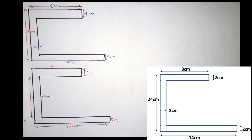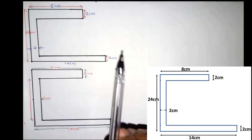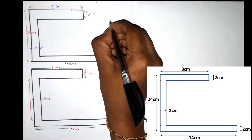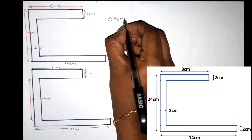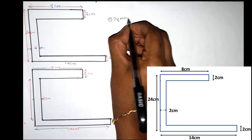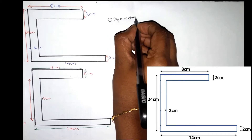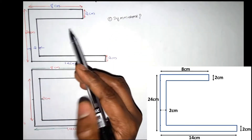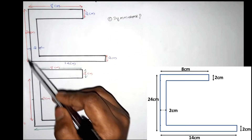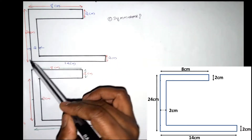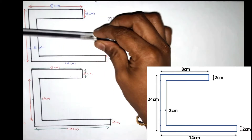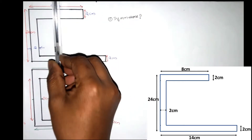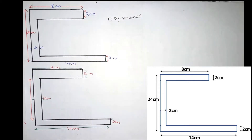The first step is to check if the figure is symmetrical. If you look at the figure, it is not symmetrical — if you look at this axis, it is not the same.